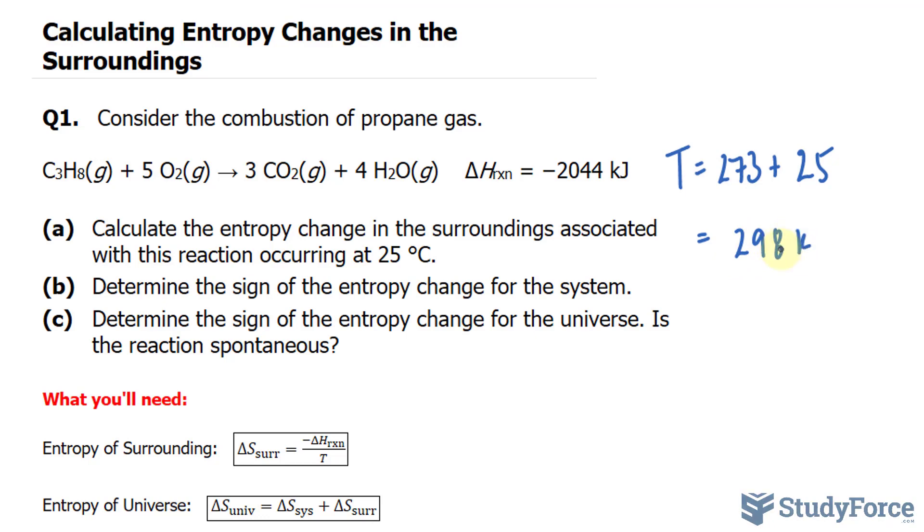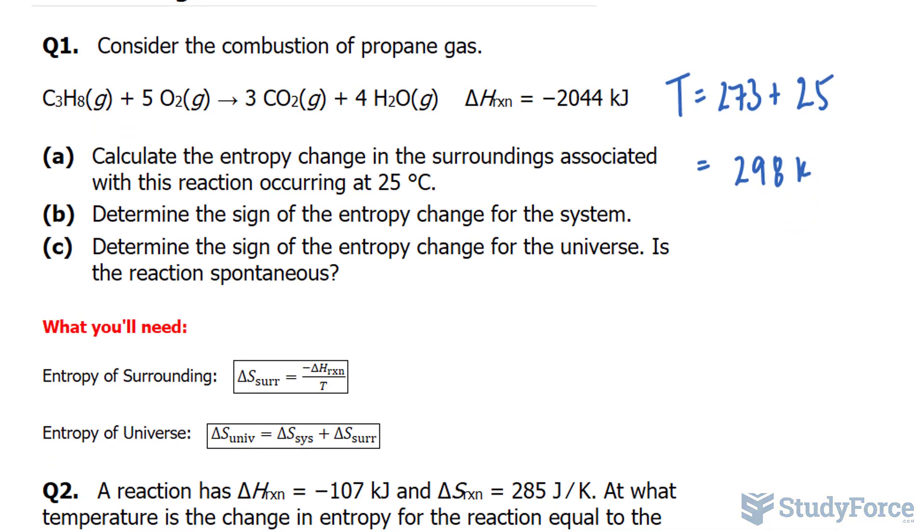The reason why we want the temperature in Kelvin is because the next thing that I want to do is use this formula, where the change in entropy of the surroundings is equal to negative delta H over T. So, as simple as this formula is, I'll substitute this number into the denominator and the enthalpy change into the numerator.